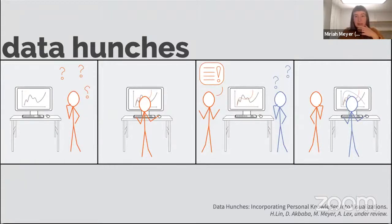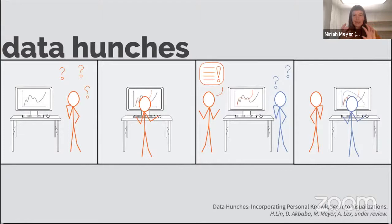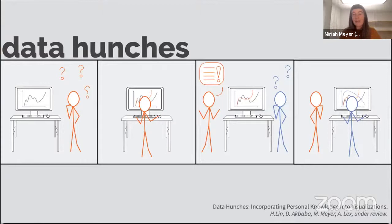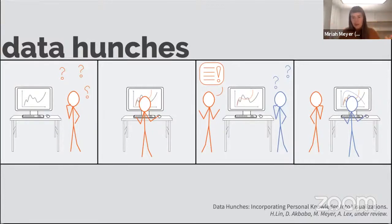One way this has played out is in some recent work we've been thinking about called data hunches — a reframing of implicit error from the Zika project, applying a more critical feminist lens. We argue that in most visual analysis of data that people know something about, you bring a lot of intuitions about how to read that data, what ways the data is an imperfect representation of the reality you care about. From this feminist lens, it gives us an opportunity to think about those hunches as first-class citizens alongside data. We talk about a design space for how we might externalize hunches in a visual space and communicate those back to others.